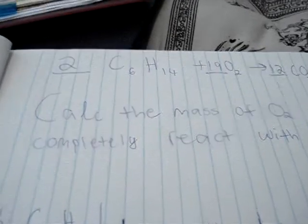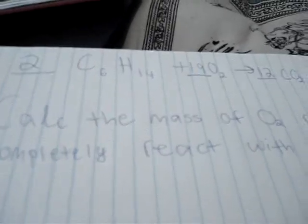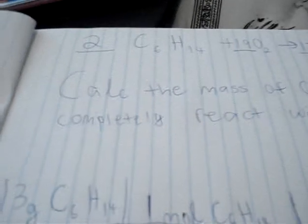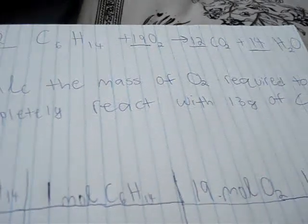And our final problem. We are given the equation 2 moles of C6H14 plus 19 oxygens yield 12 moles of carbon dioxide plus 14 moles of H2O. Our problem is, calculate the mass of O2 required to completely react with 13 grams of C6H14.